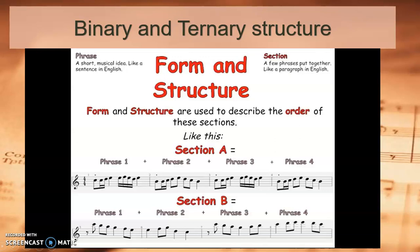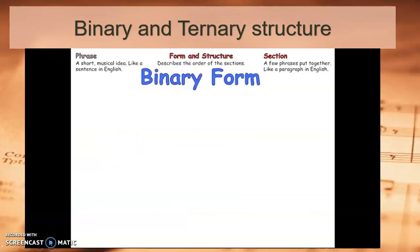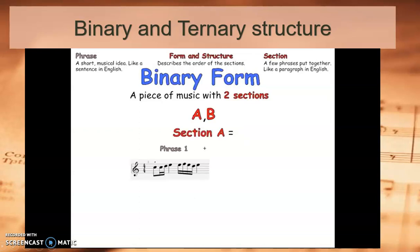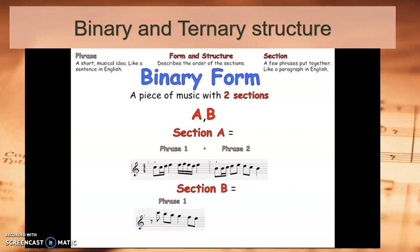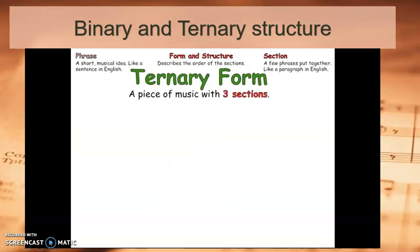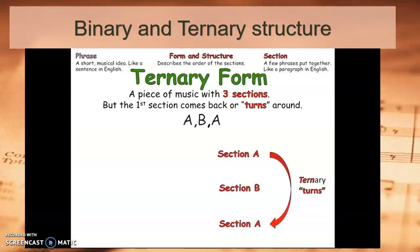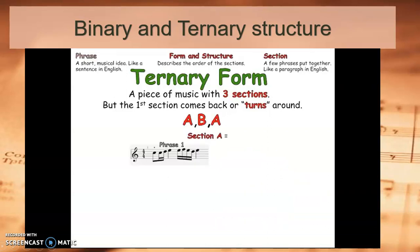The words 'form' and 'structure' are used to describe the order of these sections. There are different types of form and structure. Binary form is a piece of music with two sections — A and B. Ternary form is a piece of music with three sections, where the first section comes back: A, B, then A again.